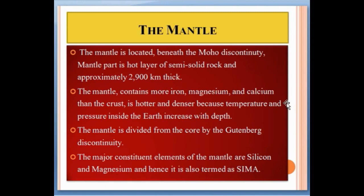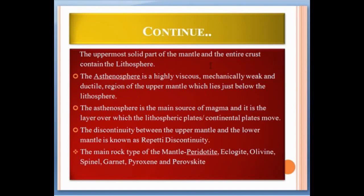The major constituent elements of the mantle are silicon and magnesium, and hence it is often termed SIMA — SI from silicon and MA from magnesium. The uppermost solid part of the mantle and the entire crust make up the lithosphere. The asthenosphere is a highly viscous, mechanically weak, and ductile region of the upper mantle lying just below the lithosphere. It is the main source of magma and the layer over which the lithospheric plates move.